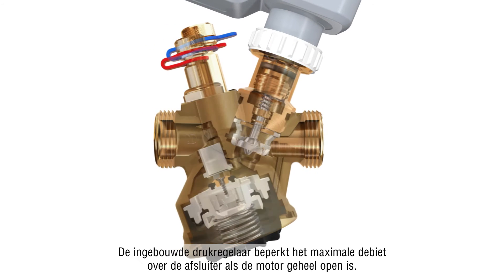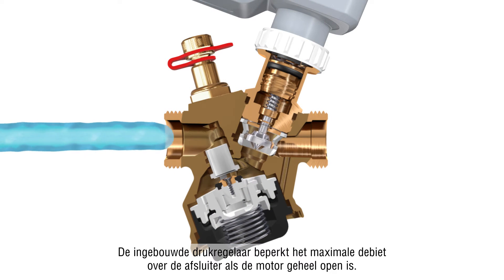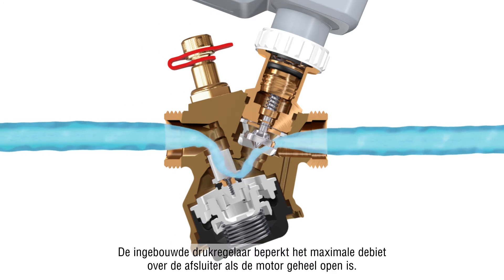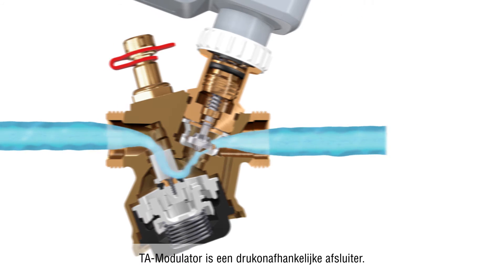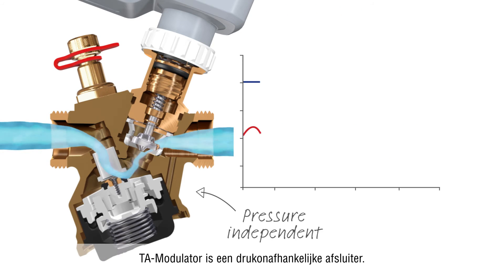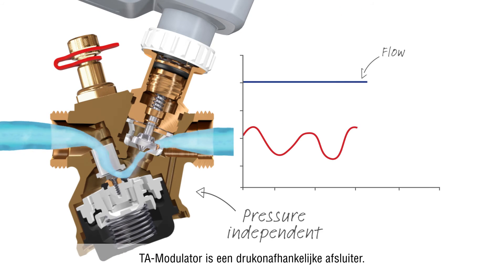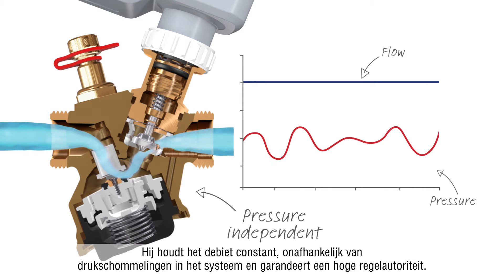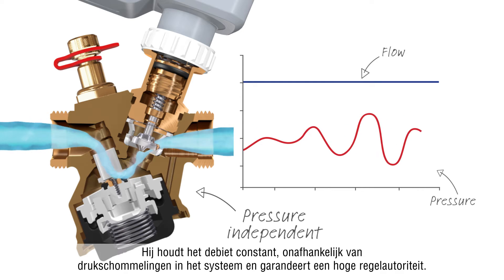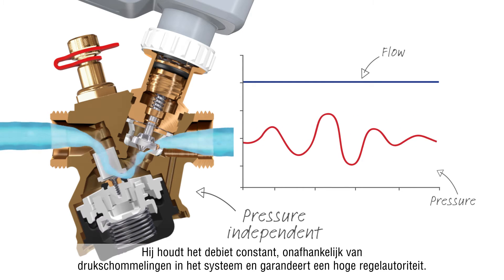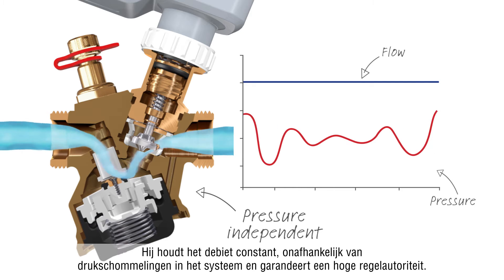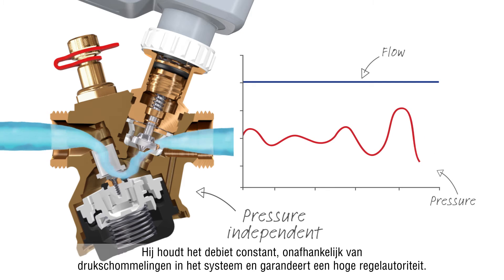The built-in pressure controller limits the maximal flow through the valve when the actuator is fully open. TA Modulator is a pressure independent valve — it keeps the flow constant regardless of pressure fluctuations in the system and guarantees high control authority.